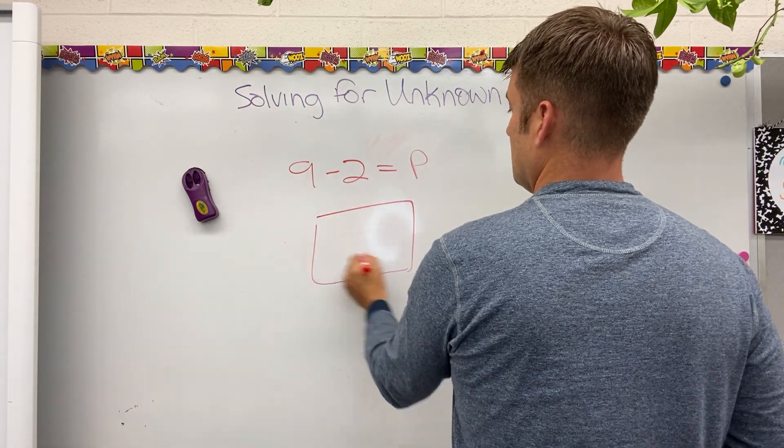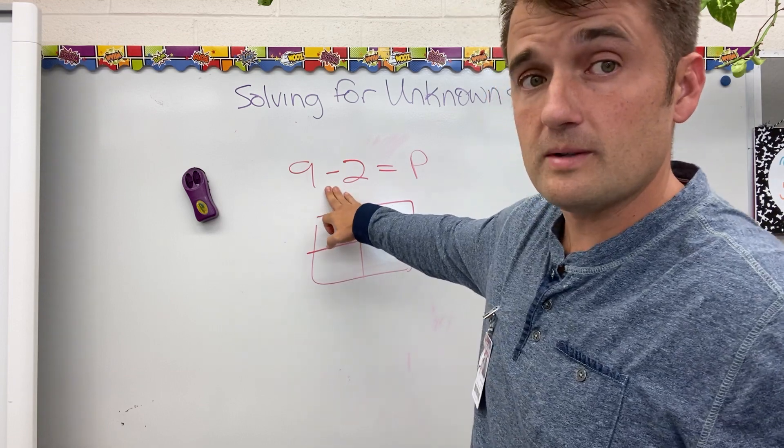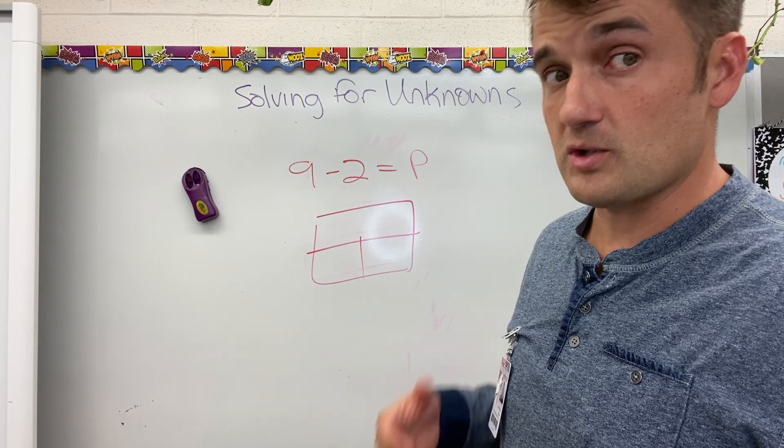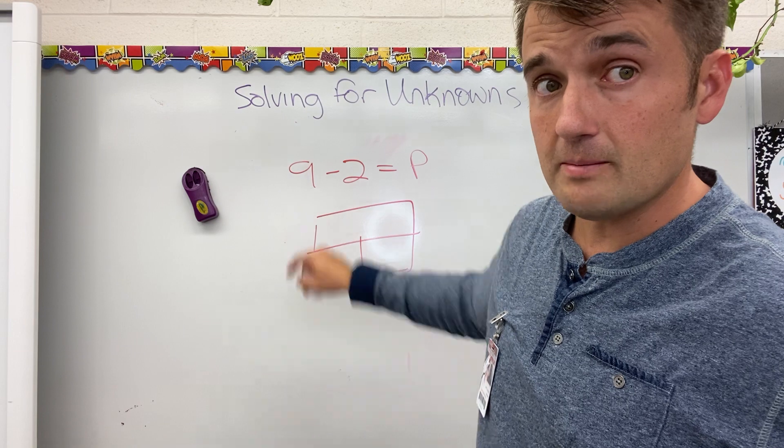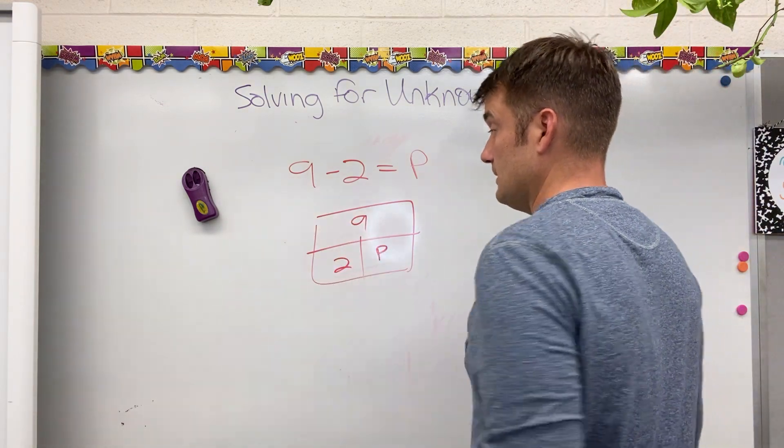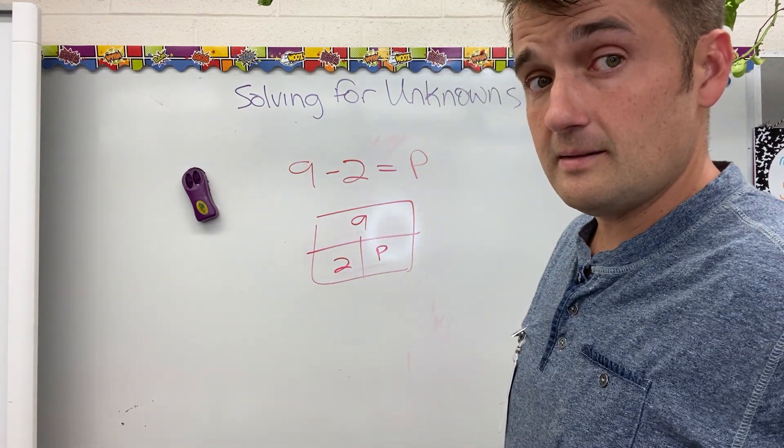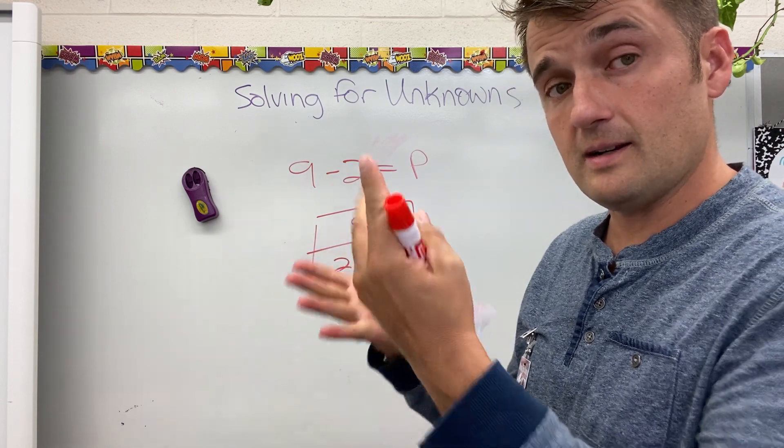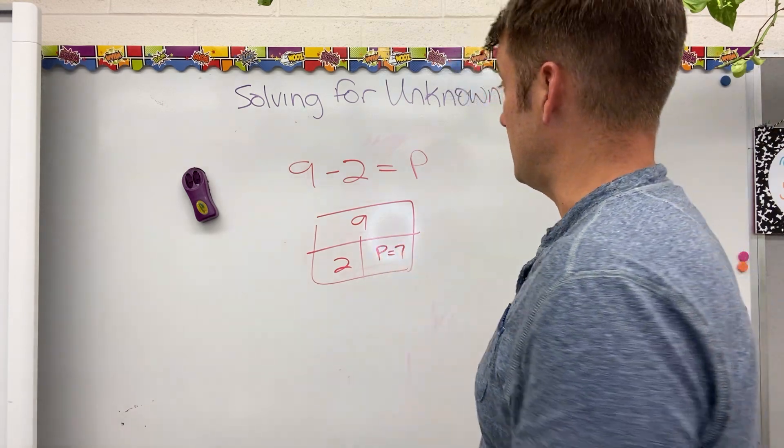Parts and a whole. I have a subtraction equation this time. Subtraction equation. When you subtract, you must subtract from the big number, the total. You start with the total. You subtract smaller amounts. I am subtracting from 9. 9 must be my total. That means my parts are 2 and P. If my parts are 2 and P, 2 and something, how much more do I need to get from 2 to 9? 2, 3, 4, 5, 6, 7, 8, 9, 7.